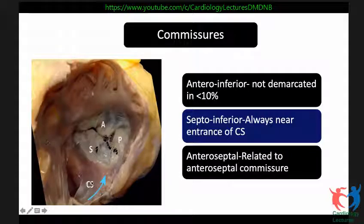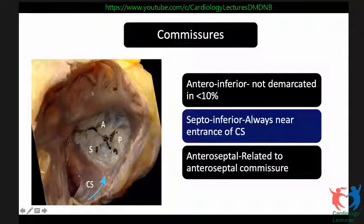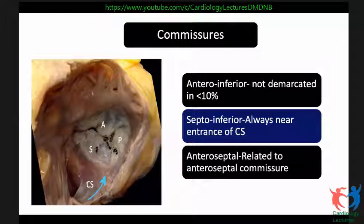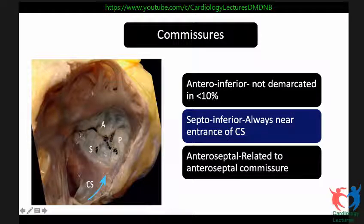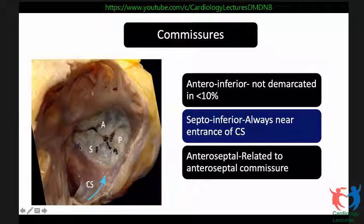This anatomy is extremely important to identify the commissures, because placement of the tricuspid valve ring for secondary or functional tricuspid regurgitation repair is critical. The antero-inferior commissure is absent in about 10% of patients. The septo-inferior commissure is directly related to the coronary sinus. And the antero-septal commissure lies in the region of the triangle of Koch and the membranous septum, as previously demonstrated.